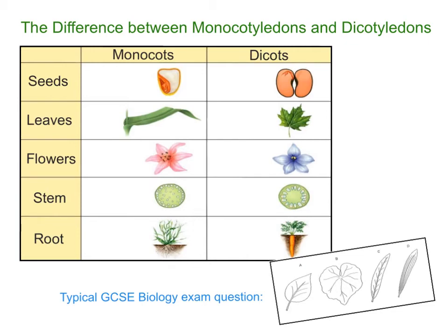Hello everyone. In this video I'm going to be talking through the differences between monocotyledons or monocots and dicotyledons, also known as dicots — types of differing flowering plants. This is particularly relevant to the IGCSE biology specification, where you're asked to give differences between these two.